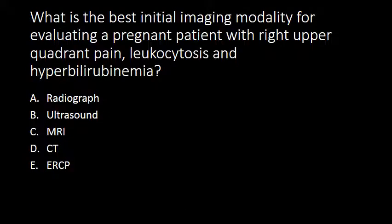What is the best initial imaging modality for evaluating a pregnant patient with right upper quadrant pain, leukocytosis, and hyperbilirubinemia? Ultrasound is the preferred first-line imaging modality for many pathologic processes in pregnant women. In this case, with right upper quadrant pain, leukocytosis, and hyperbilirubinemia, we would be thinking of acute cholecystitis, cholangitis, or choledocholithiasis, and ultrasound can help us look for gallstones, an inflamed gallbladder, or a dilated common bile duct.